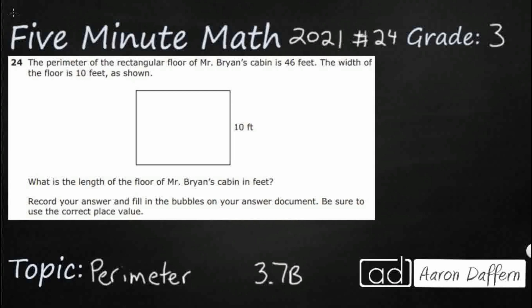This is probably one of the most difficult problems on the 2021 released STAAR test. Let's take a look at why. We have a rectangular floor here, and the perimeter is 46 feet. That's one piece of information we have — 46 feet is the entire perimeter — and then we've got the width shown right here as 10 feet. That's all they're going to give us: the perimeter and the width. And they want to know what is the length.